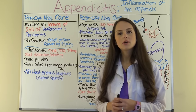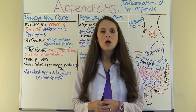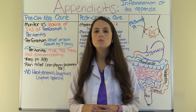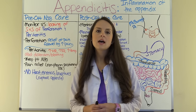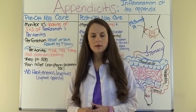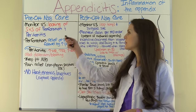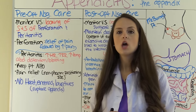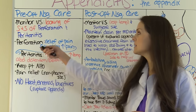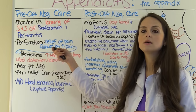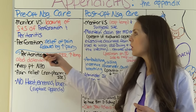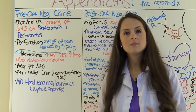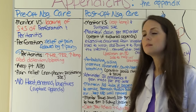Now let's look at the pre-op and post-op nursing care for a patient with appendicitis. One of the most common treatments is an appendectomy, where a surgeon removes the appendix, usually via open surgery or laparoscopic approach. As the nurse caring for this patient going for an appendectomy, you want to monitor vital signs and look for signs and symptoms that the appendix may have perforated, ruptured, or that peritonitis has developed.